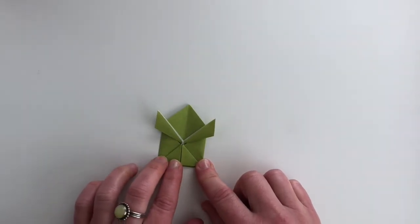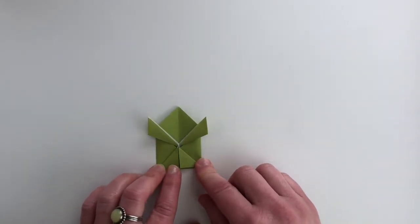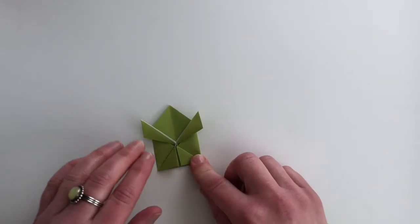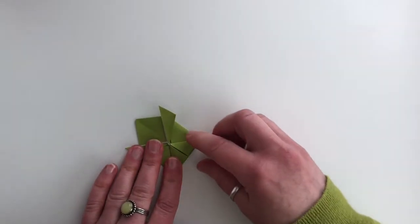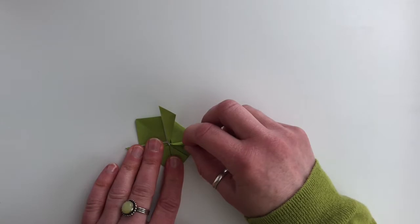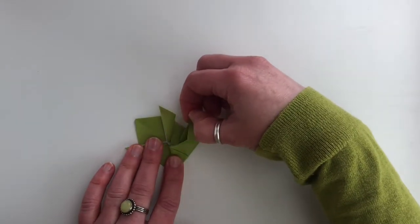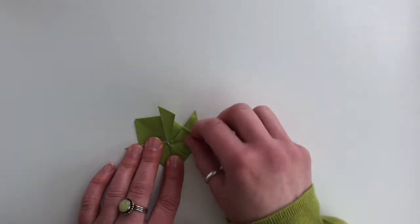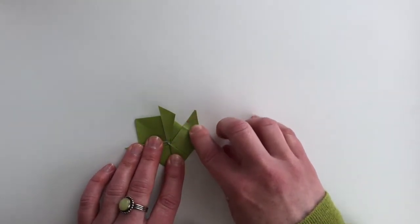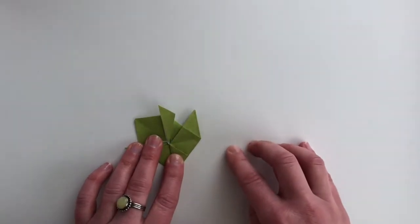And now we're going to form the back legs. This fold is the most complicated of all that we're doing. You're going to hold down the rest of your frog and lift up one side, unfolding and pulling out the center of that fold, pulling that point out and pressing it down to bring it out to the side.